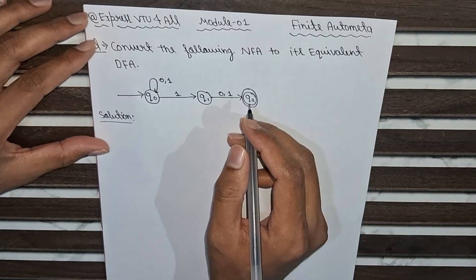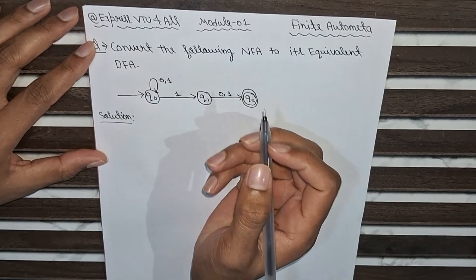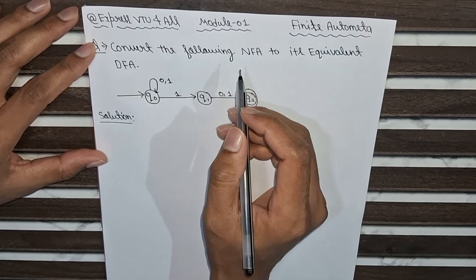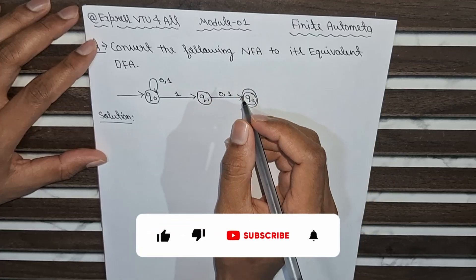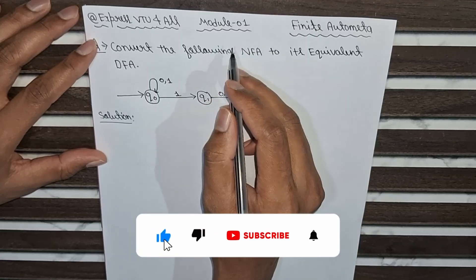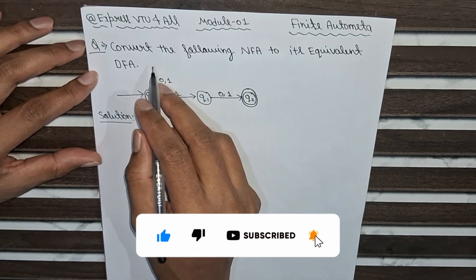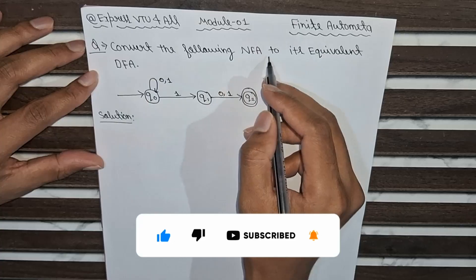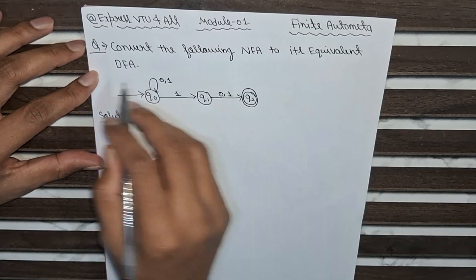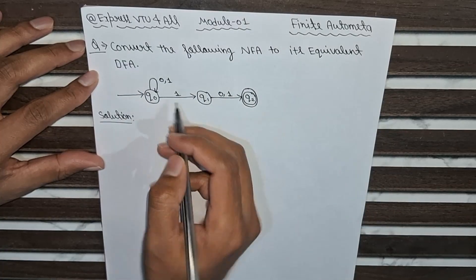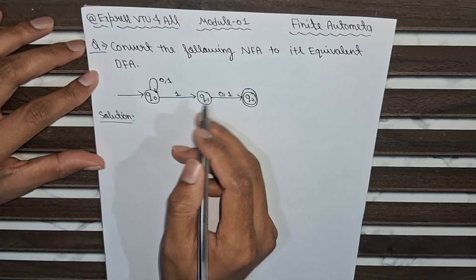Hello everyone, welcome back to our channel Express Video for All. Today we are going to solve a very important question from Module 1, Finite Automata. The question is: convert the following NFA to its equivalent DFA. This is the NFA given in the question.